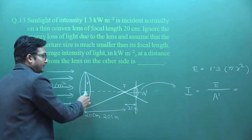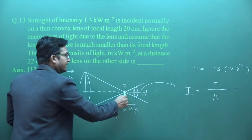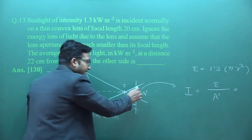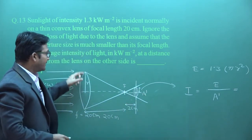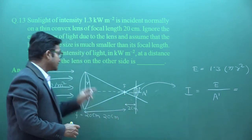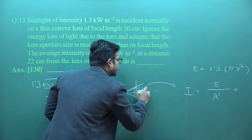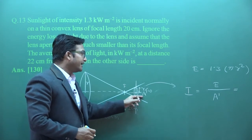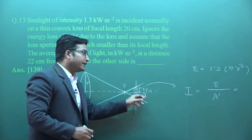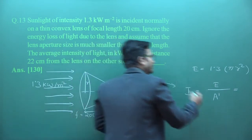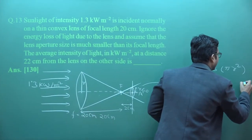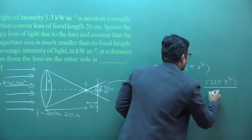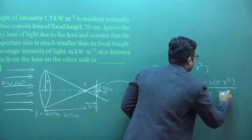It's straightforward. The distance to focus is 20 cm, and we're looking at 22 cm — so 2 cm beyond, which is one-tenth of 20 cm. Using similar triangle conditions, this distance is one-tenth, so the radius at 22 cm will be R/10. The area A′ will be π(R/10)². Putting the values: intensity = 1.3 × πR² divided by π(R/10)², which gives 130 kilowatt per meter square.